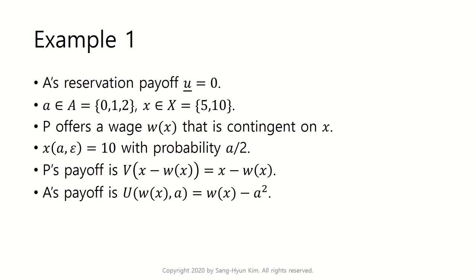The revenue is 10 with probability a/2, so if the effort level is high, the probability that the revenue is high will increase. The principal's payoff is simply the profit: x minus w, where x is revenue and w is the wage, so revenue minus wage equals profit. The agent's payoff is w (wage) minus a-squared, where a-squared is the effort cost — if you put more effort you become more exhausted, so this disutility is higher.